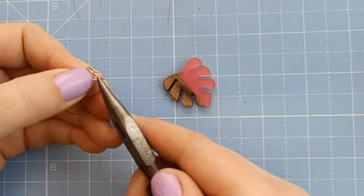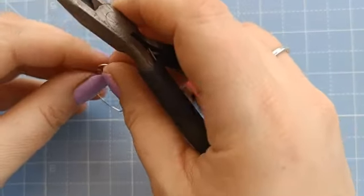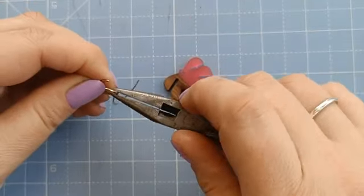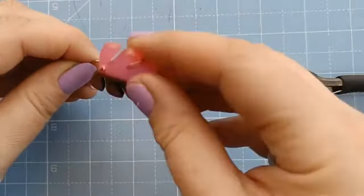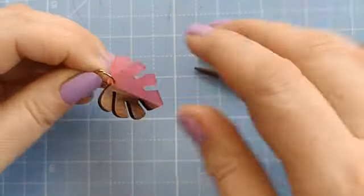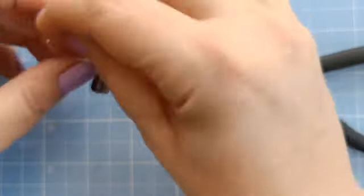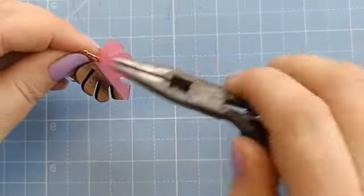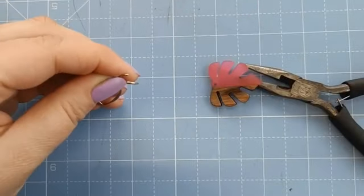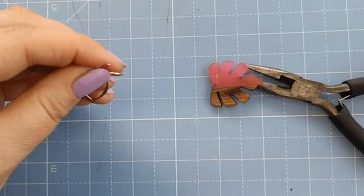And then what you can do is you can attach it to a jump ring. So again, I have to do exactly the same with these. Open this up. And then I just pop this on. Now what I may find, I always forget to remember which way around it is. Will that sit straight? No. It's going to sit on its side. So if you ever have that problem with the finding that you choose, you do need to add two jump rings to fix it.